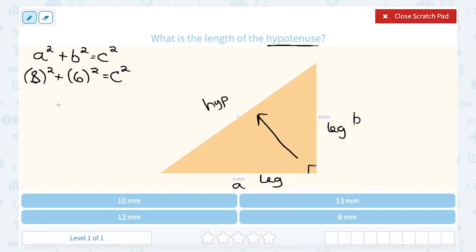So 8 squared, or 8 times 8, is 64. And 6 squared, or 6 times 6, is 36. And when we add that together, it's going to be equal to c squared. Okay, well adding that up, 64 plus 36 gives us 100. So we know 100 is equal to c squared.